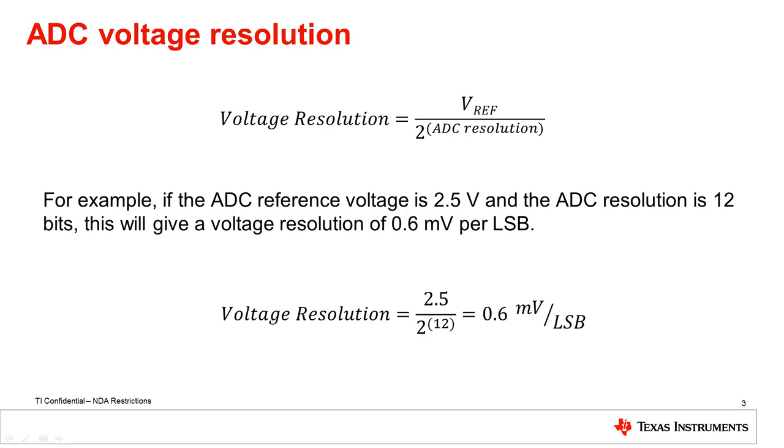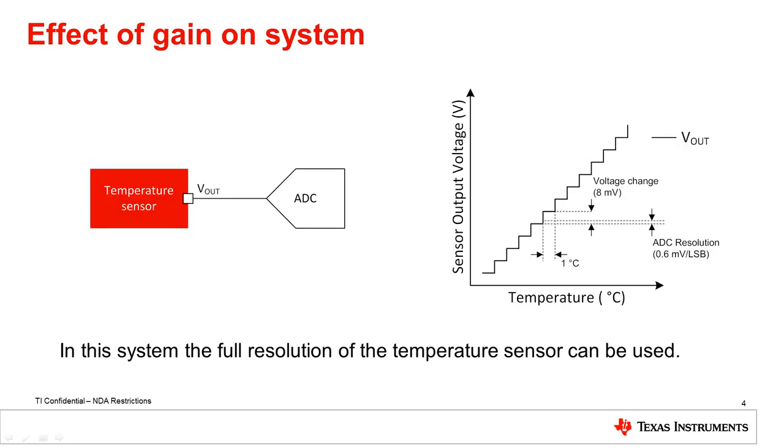Now that we know the voltage resolution of the ADC, we can determine how the system will operate by examining the gain of the temperature sensor. Using the ADC voltage resolution from the previous example of 0.6 millivolts per LSB and a temperature sensor with a gain of 8 millivolts per degree C, the ADC can resolve each incremental step of the sensor per change in degrees Celsius as shown in the graph. In this system, the full resolution of the temperature sensor can be used by the ADC and no modifications are needed.